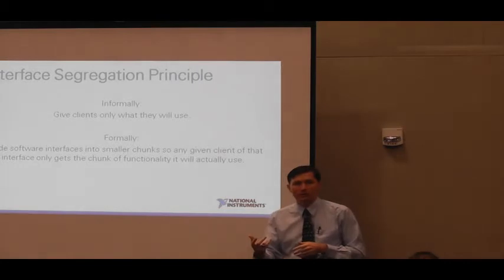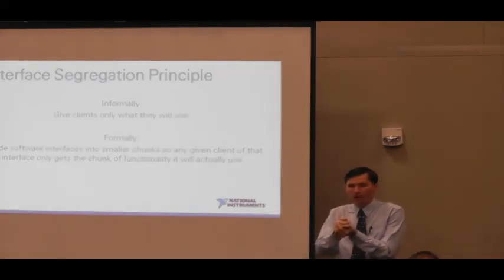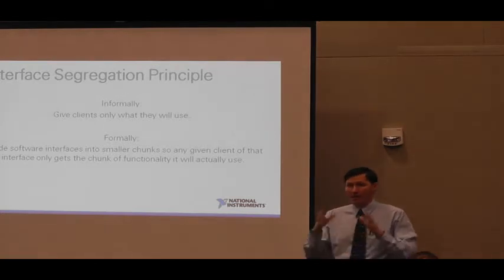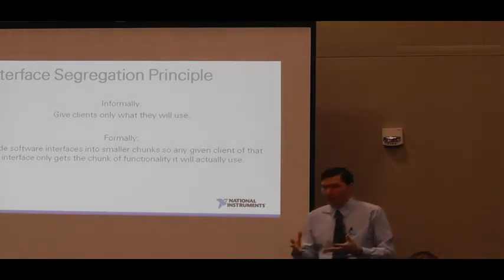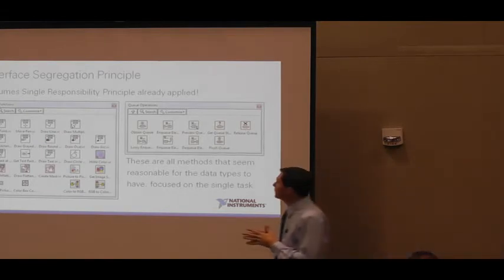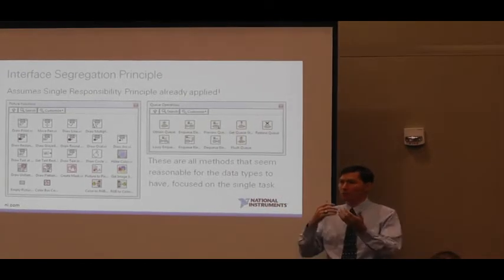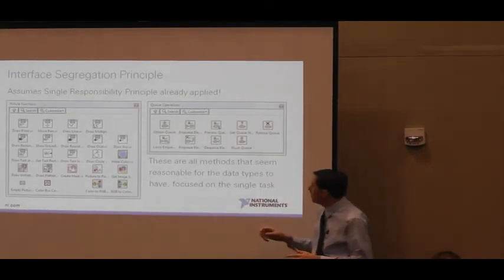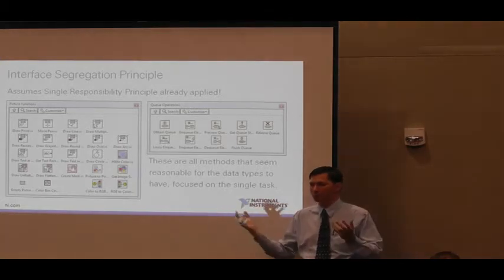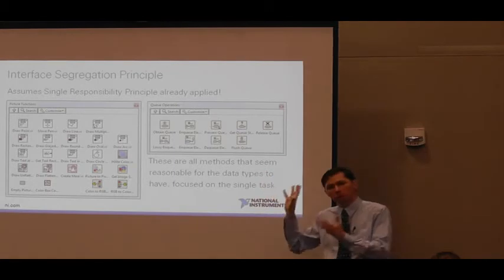We're assuming you've already created entities following the Single Responsibility Principle — you've got some API that's already nice and focused. But there are still times when that focused API is still too broad for some clients. Consider the queue API: you can obtain a queue, destroy it, enqueue, dequeue, with a few variations. This is a pretty good single-responsibility API. It does one thing — it manages data going in and coming out. Similarly, there's a drawing API where all the functions draw a specific thing. These are nicely, reasonably on-focus examples.